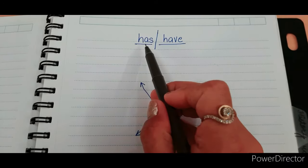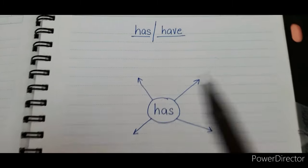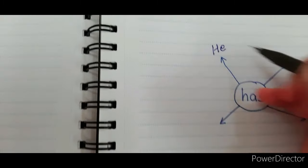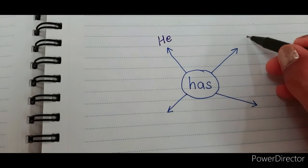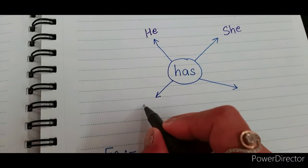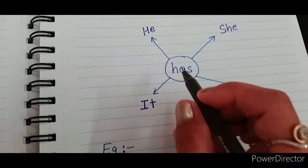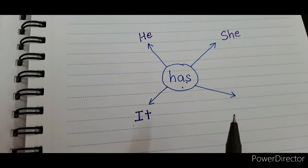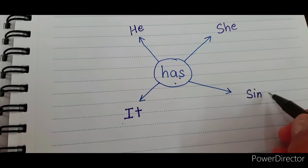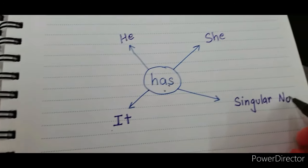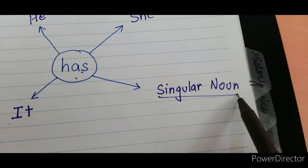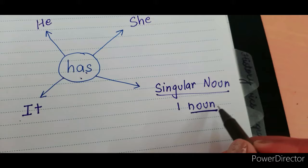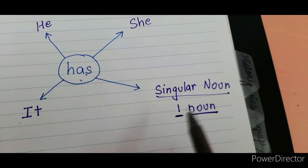Hi, let's learn when to write 'has' and 'have'. We use 'has' with he, she, and it. We also use 'has' with one noun that is singular. Singular noun means one noun — the name of a person, place, animal, bird, or a thing. So with any one noun, we use 'has'.